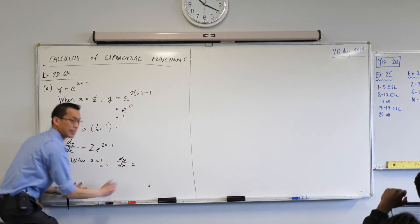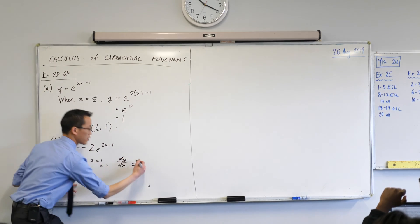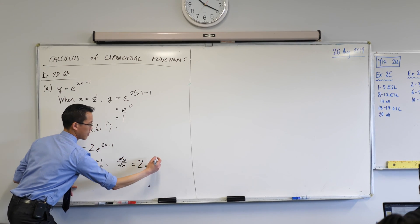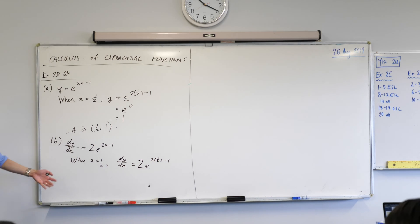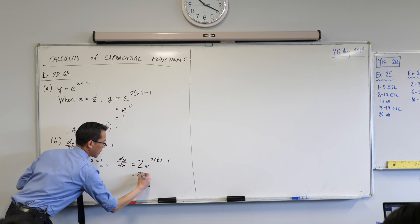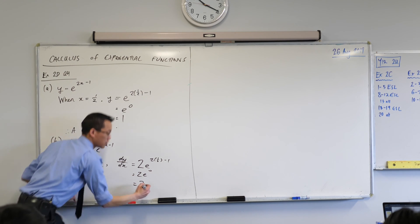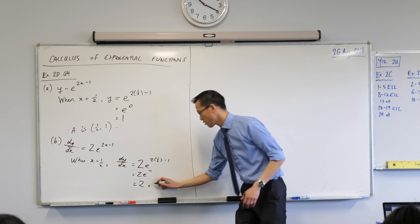let's go ahead and, again, do that substitution step. So I've got 2e to the 2 times 1/2 minus 1. That feels familiar, doesn't it? It's the same function I was dealing with earlier. So just like before, I'm going to get 2e to the 0, which is 2, and that's what I was supposed to get.